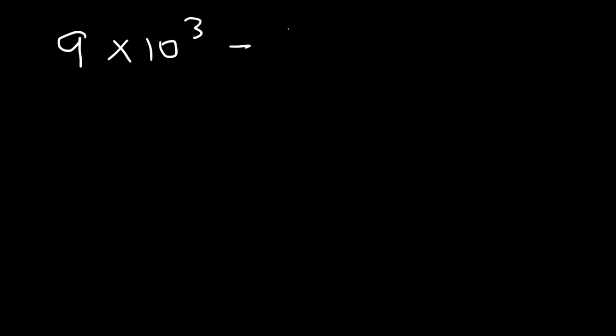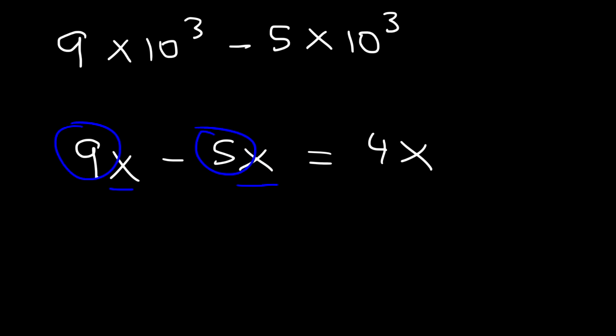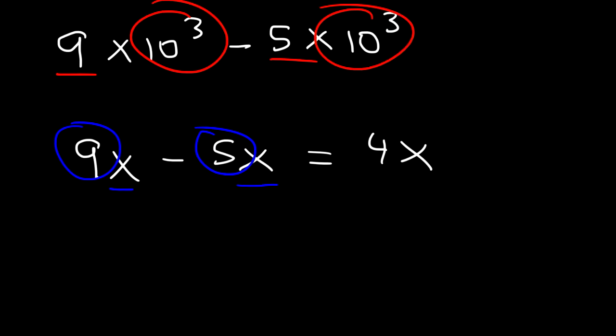In this lesson I want to focus on adding and subtracting two numbers using scientific notation. Consider this example: 9 times 10 to the 3 minus 5 times 10 to the 3. Think of it like 9x minus 5x — both terms contain the same variable, so you simply subtract the coefficients since they're attached to the same thing, 10 to the 3.